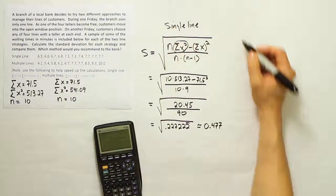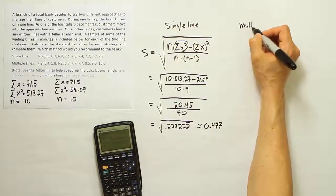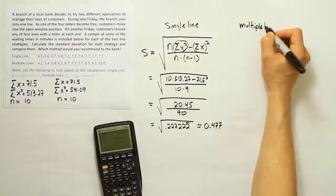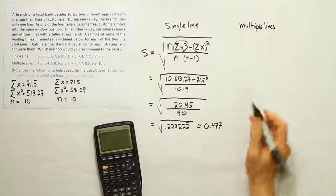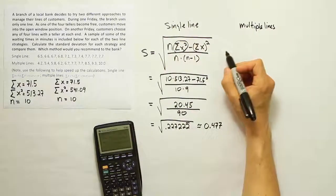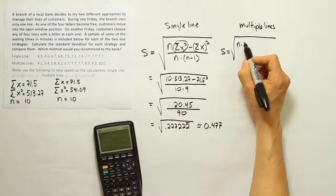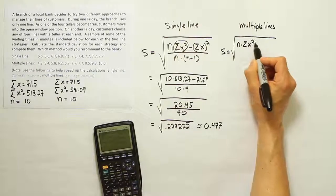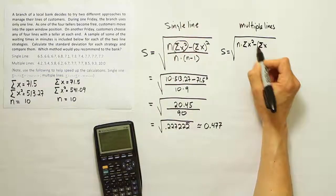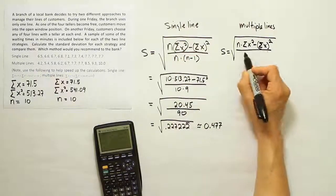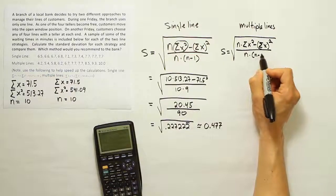And then let's do it for the multiple lines. And then from there, we'll make a judgment of which strategy we would recommend. So standard deviation for that. The same formula, of course, n times the summation of x squared minus the summation of x quantity squared divided by n times n minus 1.